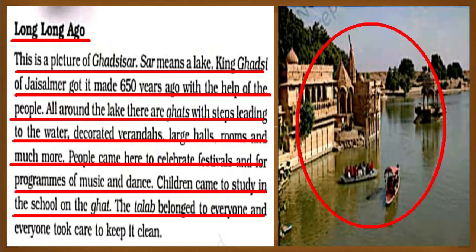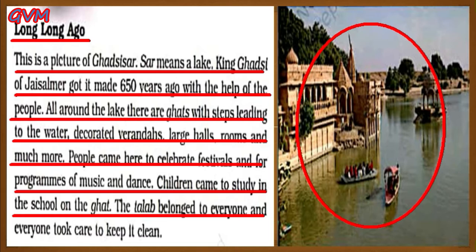The word Saar means a lake. This ghat was made by King Gharci of Jaisalmer around 650 years ago with the help of surrounding people. All around the lake there are many ghats with steps leading towards the water, many decorative verandas, large halls, rooms, and more. People came here to celebrate festivals and for music and dance. Even children came to study in the school on the ghats. This lake belonged to everyone, so every person took care to keep it clean.